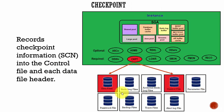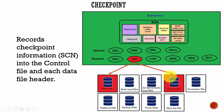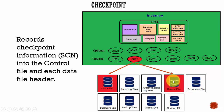Now we know what a checkpoint is, and it is easy to guess what the checkpoint process does. The checkpoint process records the checkpoint information — that is, the system change number — into the data files and into the control file. On the data files it records the SCN onto the headers, and it also writes the SCN into the control file.